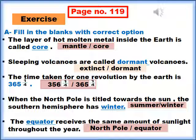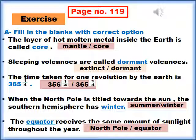The time taken for one revolution by the earth is 365 and 1/4 days. The options are 356 and 1/4, or 365 and 1/4. The correct answer is 365 whole 1/4.